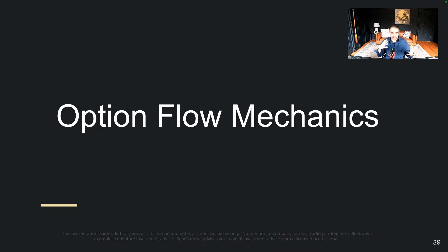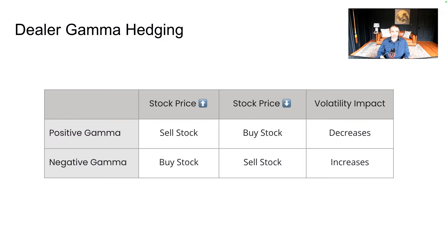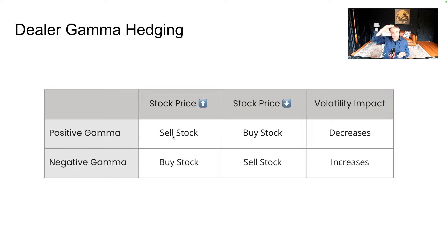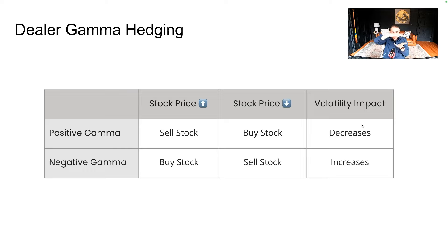Let's talk about the mechanics of these flows and outline exactly how these are possibly suppressing volatility. If you have a big positive gamma position — which we believe dealers do, and which JP Morgan and other banks have suggested — that means when the index is going up, you're selling stock into that rally, and when the market goes down, you're buying stock. That decreases volatility.